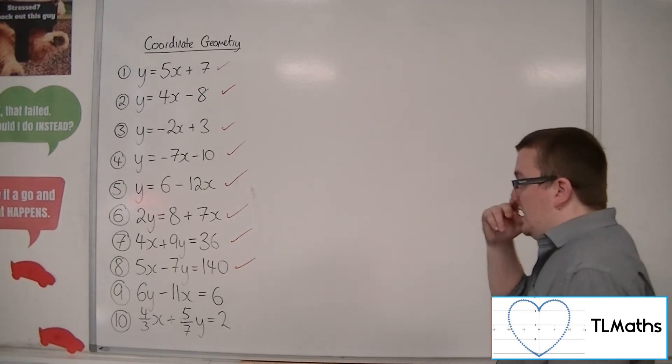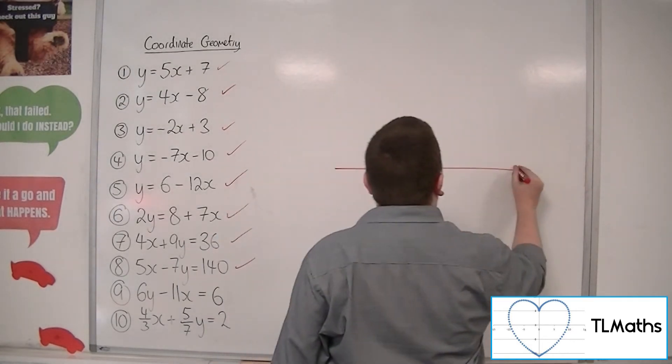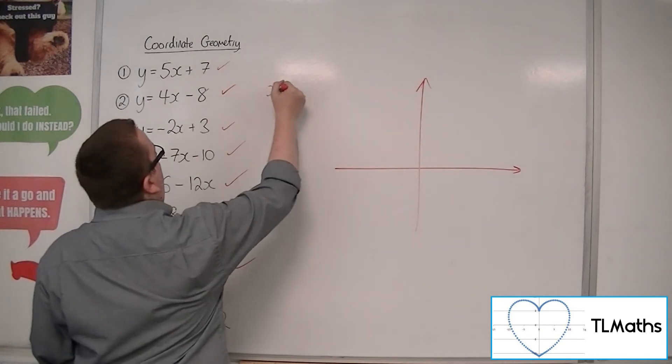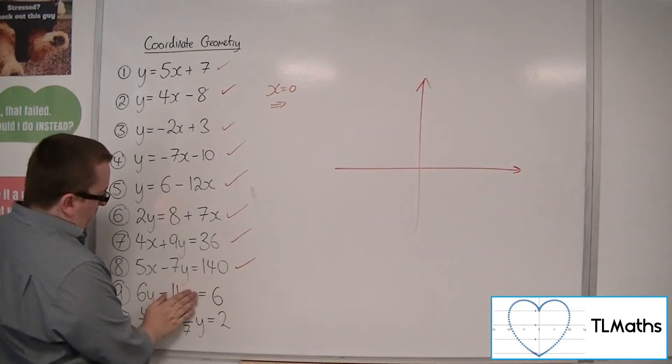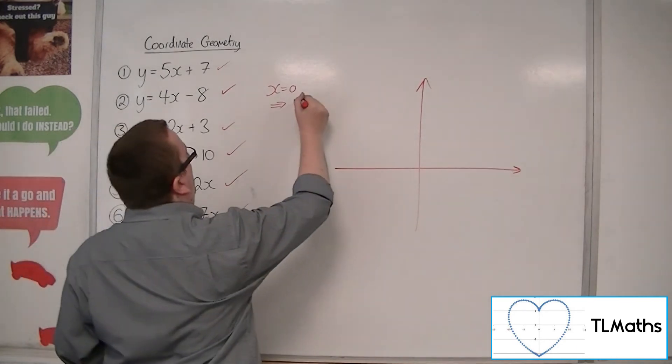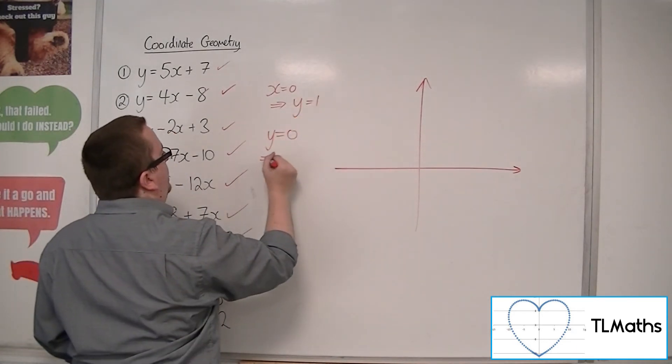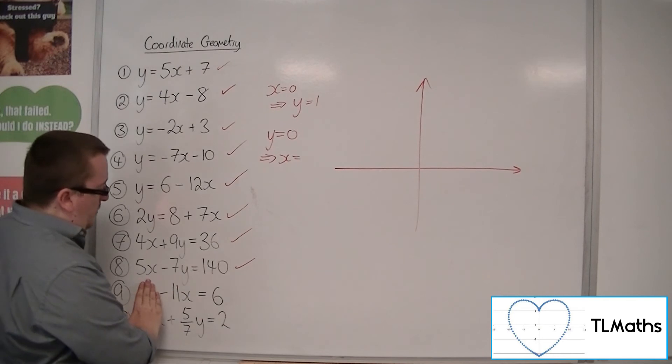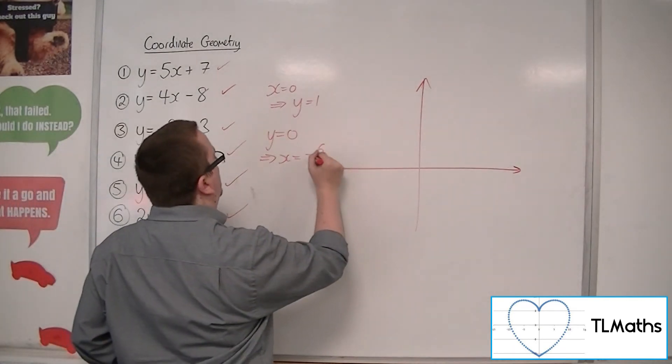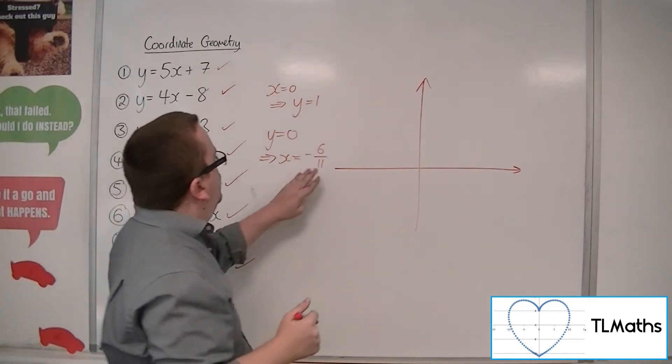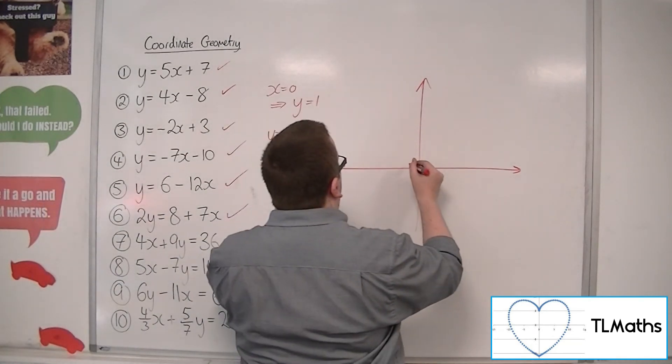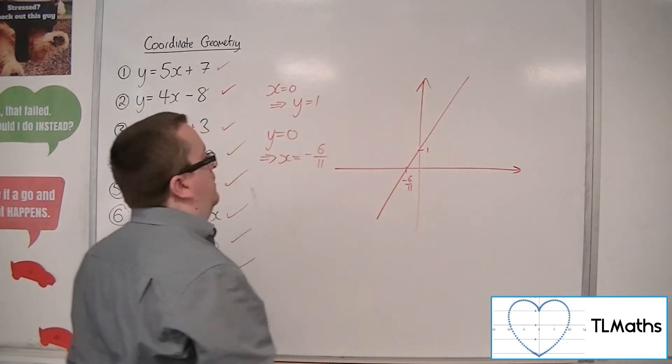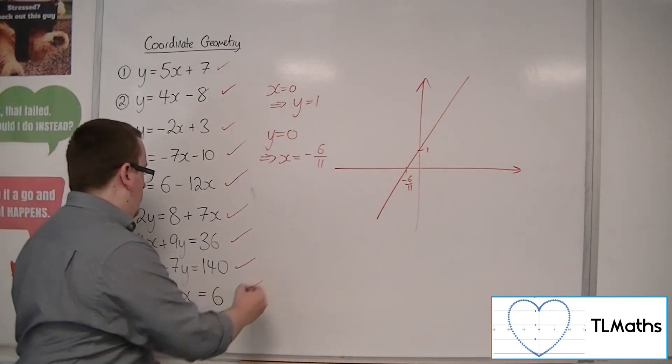Number 9. 6y minus 11x is equal to 6. Okay, right. This one I might want to take a few more notes on. So, when x is 0, cover up the minus 11x. I'm going to get 6y equals 6. So y equals 1. So that's quite straightforward. But when y is 0, when y is 0, I get minus 11x equals 6. So x must be equal to minus 6 over 11. So that's smaller than 1. So it would be something like that. Minus 6 11ths. And there's 1. Okay. And so that would be number 9.